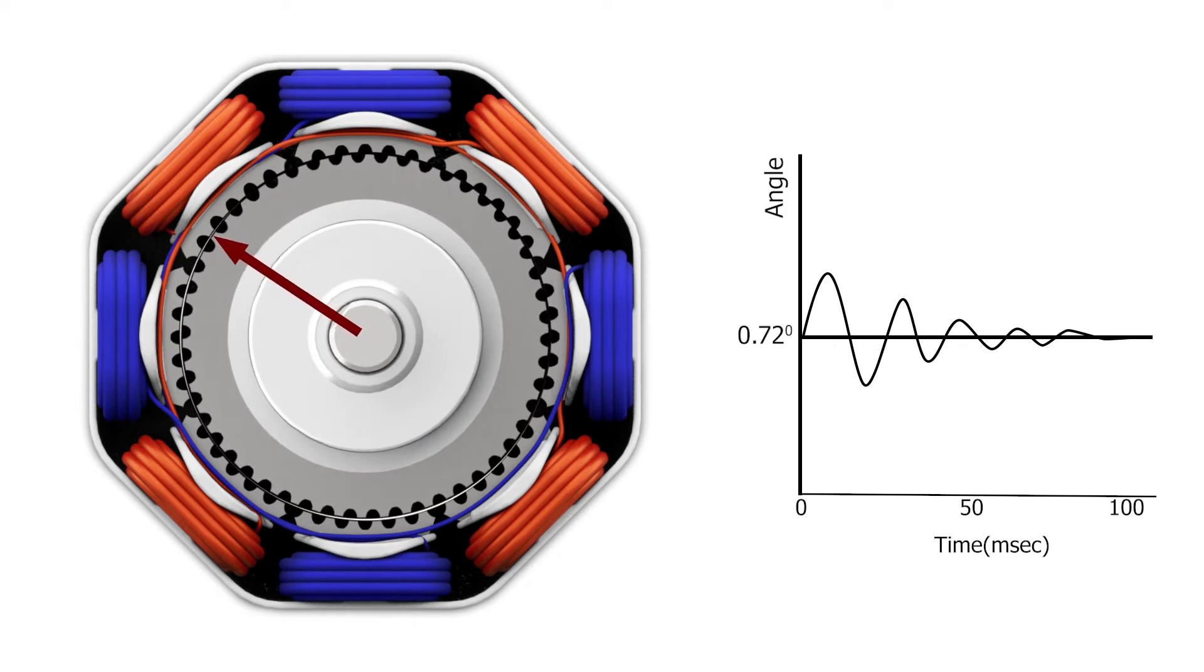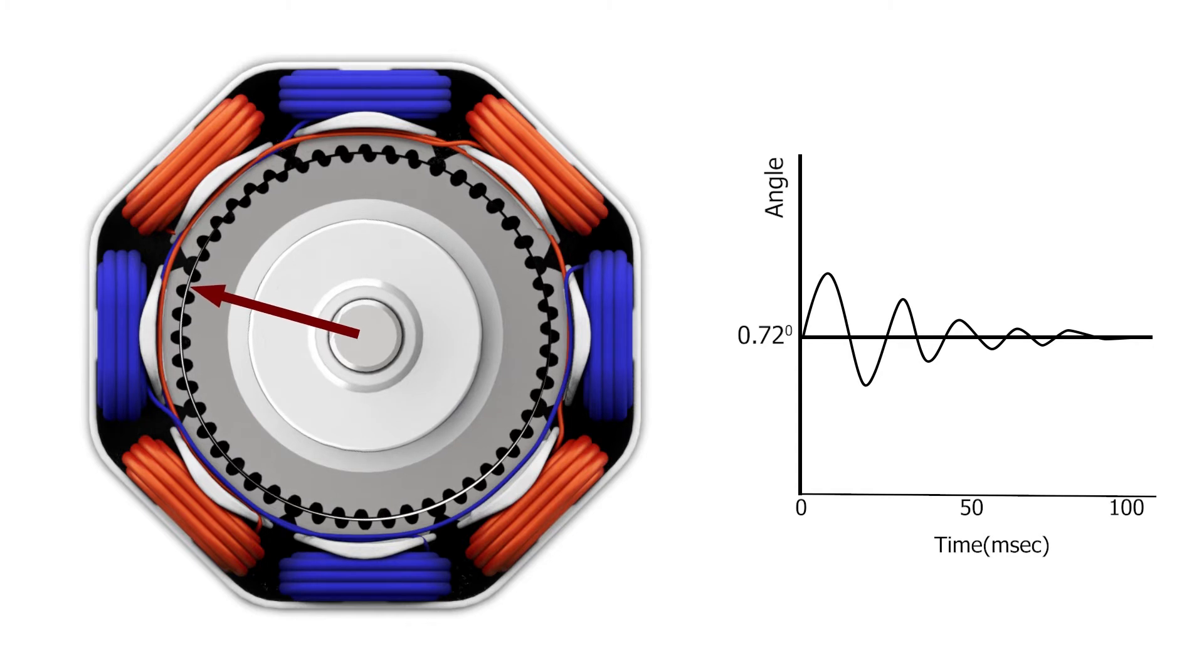Similar to a bungee cord, the momentum carries the rotor past its stop point, then bounces back and forth until finally coming to rest. In most cases, however, the motor is commanded to move to the next step before it comes to rest.